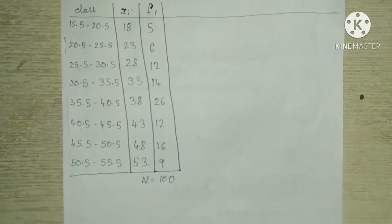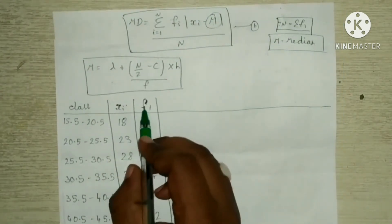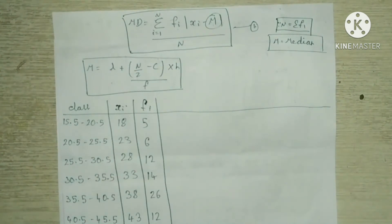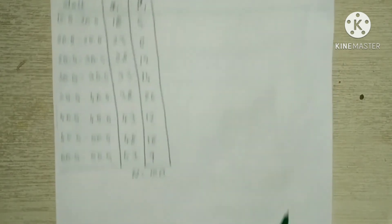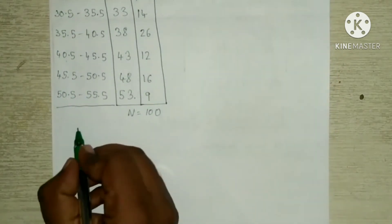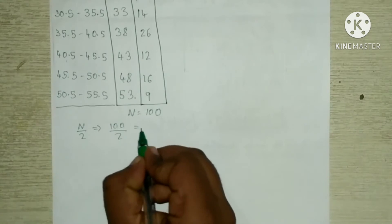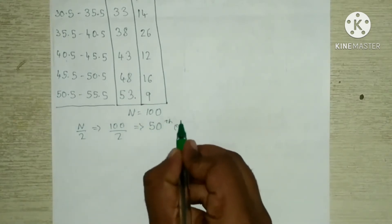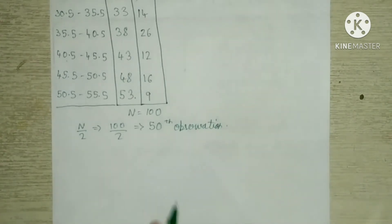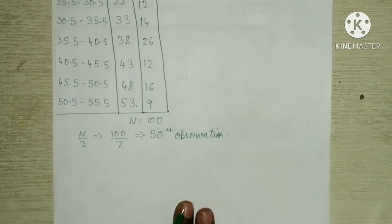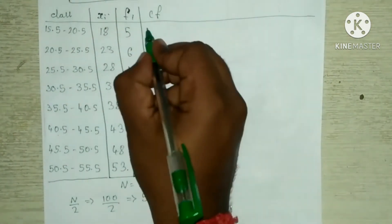Now we have x and f. We need to find m (the median). To find the median class, divide n by 2: n/2 = 100/2 = 50. So we need the 50th term observation. To identify this, we write the cumulative frequency.